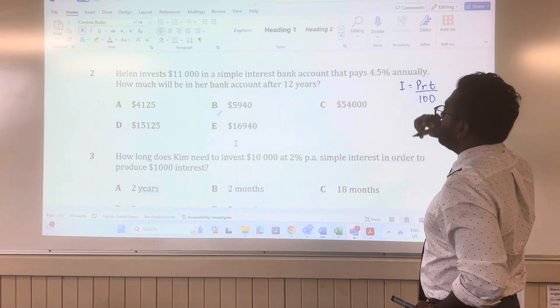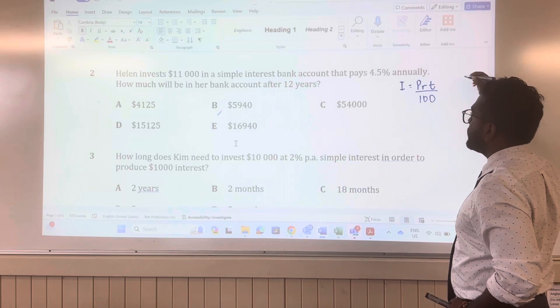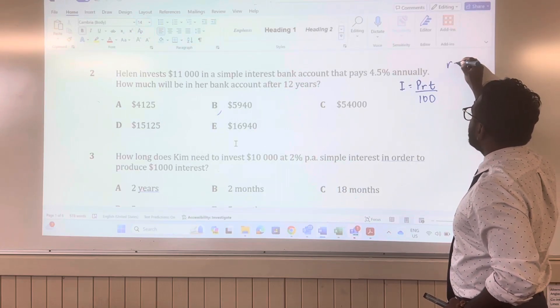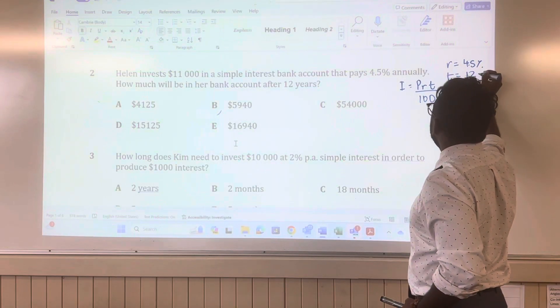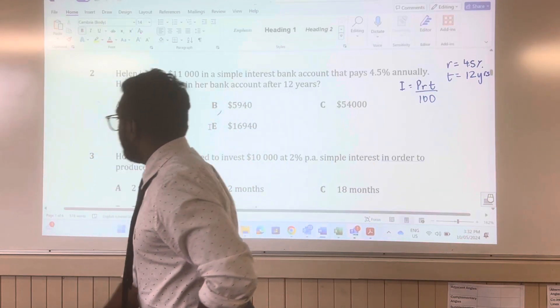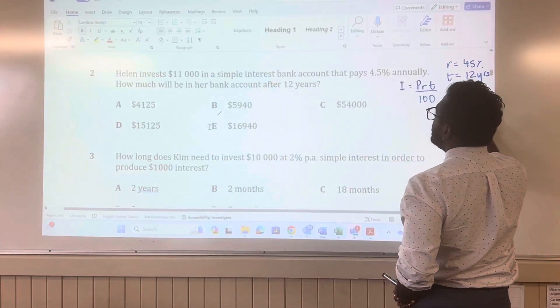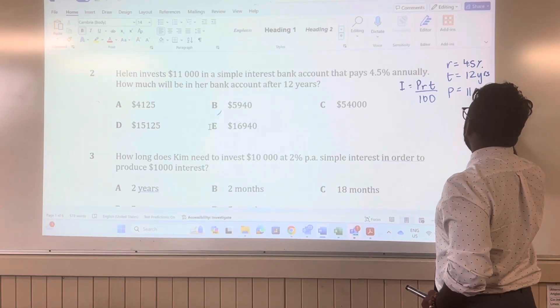Now we're going to write down what we know. So how much will be in her bank account after 12 years? Our rate is 4.5%. Our time is equal to 12 years. And then the principal, which is how much she invests, is going to be $11,000.